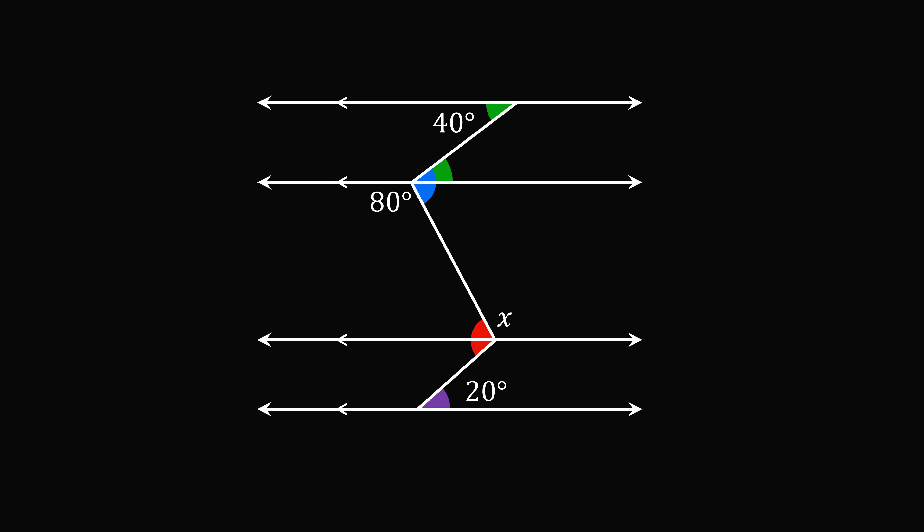So this angle over here will be equal to 40 degrees. Then the next angle will be 80 degrees minus 40 degrees. So this is also equal to 40 degrees. Then we have alternate interior angles here. So this angle will also be equal to 40 degrees. Finally, this angle will be an alternate interior angle of the 20 degree angle. So it will be equal to 20 degrees.